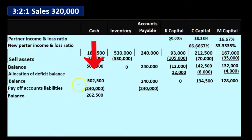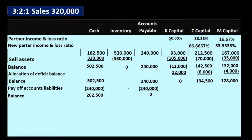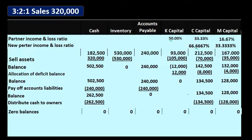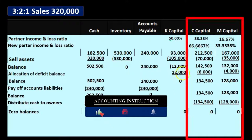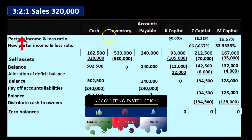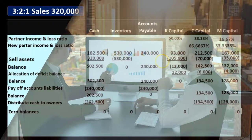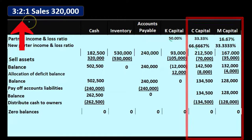After paying liabilities, cash drops from $502,500 minus $240,000 to $262,500. Accounts payable goes to zero. Capital accounts remain at $134,500 for C and $128,000 for M. We then distribute the remaining cash to the owners, bringing all balances to zero. Note that these final distributions won't necessarily match the profit-sharing ratios — profit sharing only applies to net income allocation, not withdrawals or investments.